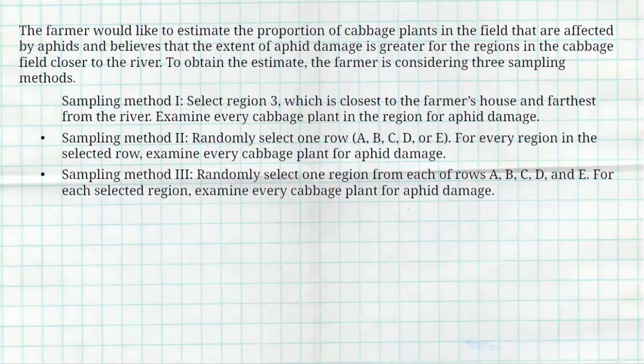All right, now they give us some more information. The farmer would like to estimate the proportion of cabbage plants in the field that are affected by aphids and believes that the extent of aphid damage is greater for the regions in the fields closer to the river. To obtain an estimate, he's considering three different sampling methods.